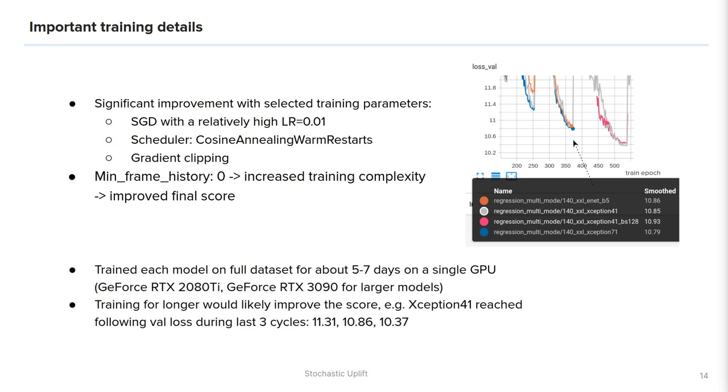Our best model was based on Xception 41. It achieved a validation score of 1037 which corresponds to the fifth place at the leaderboard. Training for longer is likely to improve the score.